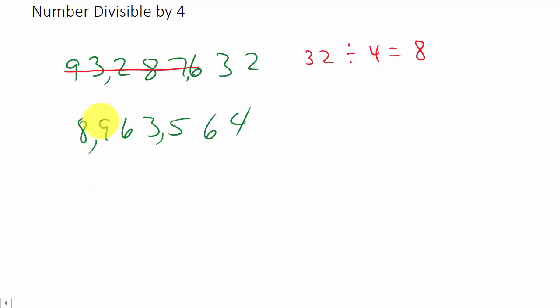Alright, so we got 8,963,564. Now, does 4 divide into this number evenly? Alright, so just like earlier, we can disregard all of the digits except for the last two. And we want to see, does 4 divide into 64 evenly? And it does.